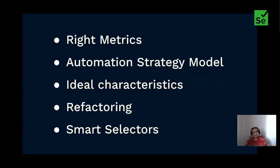How do you fix this? By focusing on four key points: first, instrumentation and adoption of the right metrics; second, revisiting your automation strategy with module focus; third, practicing good test case characteristics; fourth, fixing code smell by refactoring; and finally, using selectors smartly.